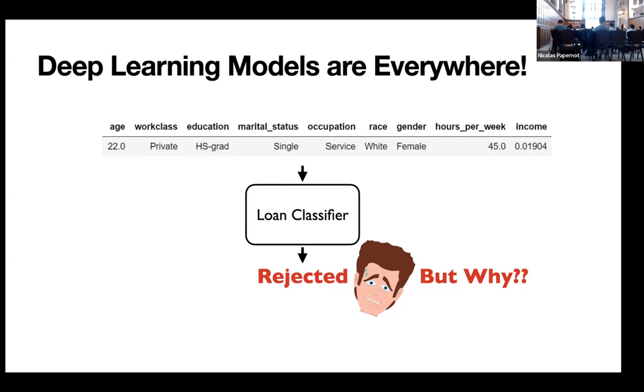I'll drill deeper into decision-making applications. Here we have an example of a loan decision classifier. The task here is that given attributes of a person, I want to decide whether that person should be granted a loan or not. There are banking systems which have these deployed applications. Depending on the age of the person, the education, marital status, occupation, race, gender, and income, a certain decision gets taken.